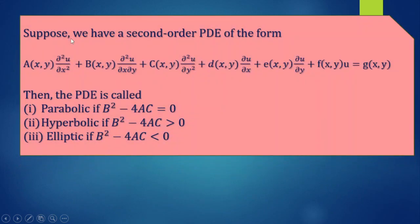For a second order partial differential equation of the form A(∂²U/∂x²) plus B(∂²U/∂x∂y) plus C(∂²U/∂y²) plus D(∂U/∂x) plus E(∂U/∂y) plus F(x,y,U) equals G(x,y), the PDE is parabolic if B² minus 4AC equals 0, where A is the coefficient of ∂²U/∂x² and C is the coefficient of ∂²U/∂y². When B² minus 4AC is greater than 0, the PDE is hyperbolic.